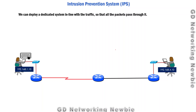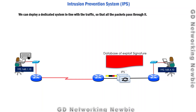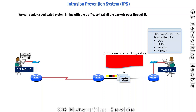Now let's move to IPS — the Intrusion Prevention System. In IPS, we deploy a dedicated system but this time it is inline with the traffic. All traffic coming from the left hand side network flows through this IPS, meaning every packet destined for the right hand side network must pass through this system. This system also has a database of exploit signatures with patterns for different kinds of attacks, and every packet flowing through the system is matched against these signatures.